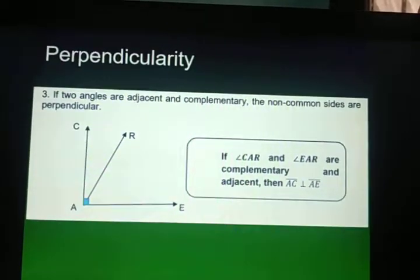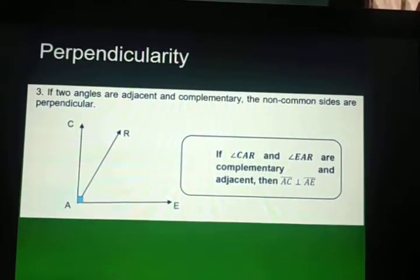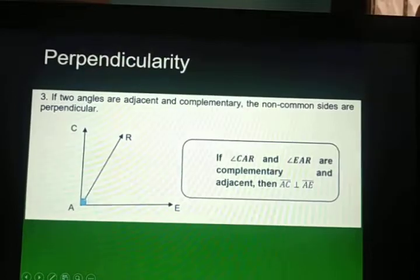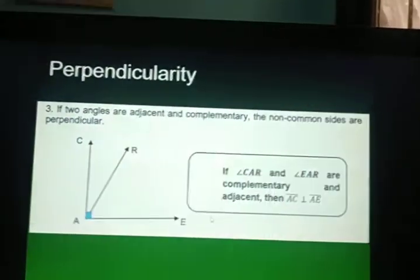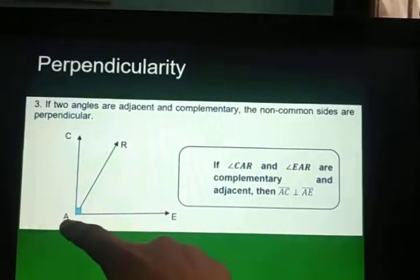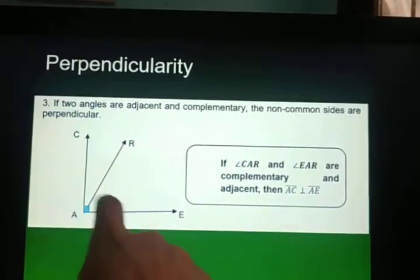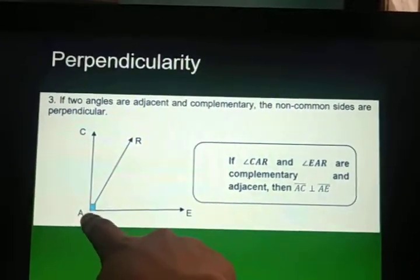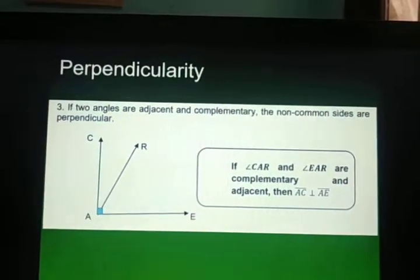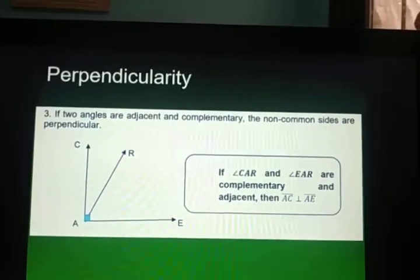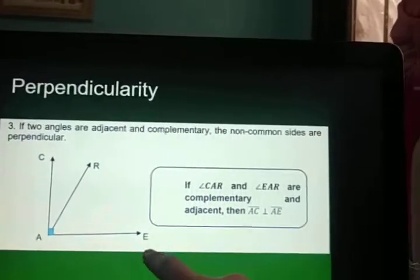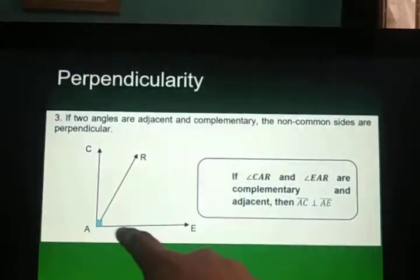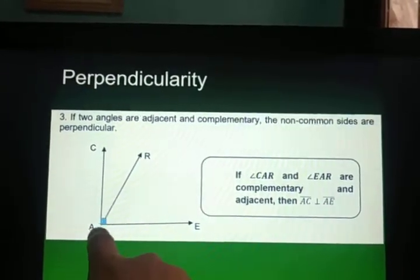Third theorem: if two angles are adjacent and complementary, the non-common sides are perpendicular. We have angle CAR and angle EAR. They are complementary because they have a sum of 90 degrees, as marked by the blue box. Their non-common sides are ray AC and ray AE. They are called perpendicular because they meet at point A and form a right angle.